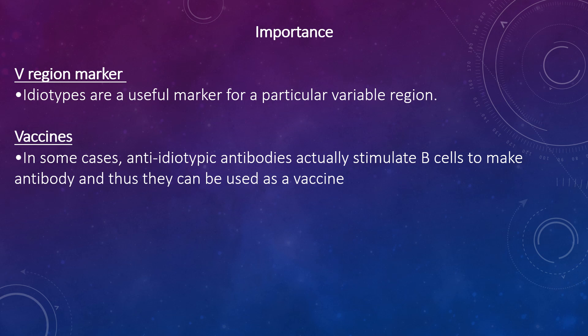Idiotypes are useful markers for a particular variable region. There is evidence that immune responses may be regulated by anti-idiotype antibodies directed against our own idiotypes — this is known as regulation of immune responses. In some cases, anti-idiotypic antibodies can actually stimulate B-cells to make antibodies, and thus they can be used as vaccines. This approach is being explored to immunise against highly dangerous pathogens that cannot be used safely as conventional vaccines.